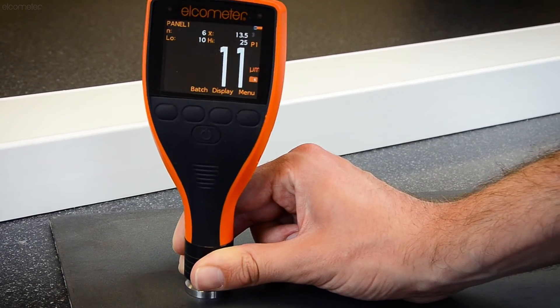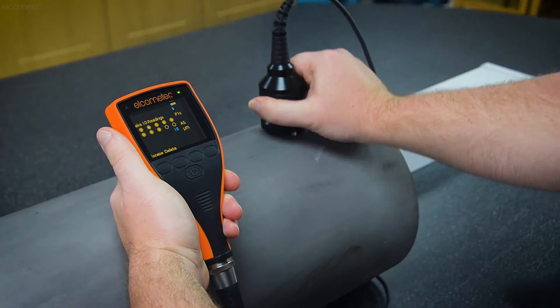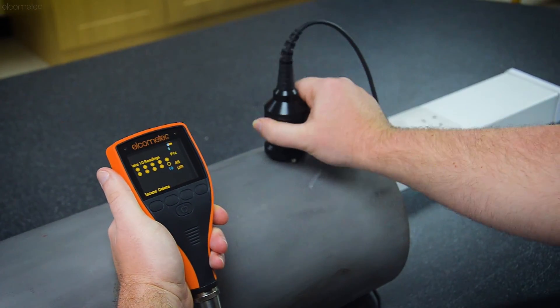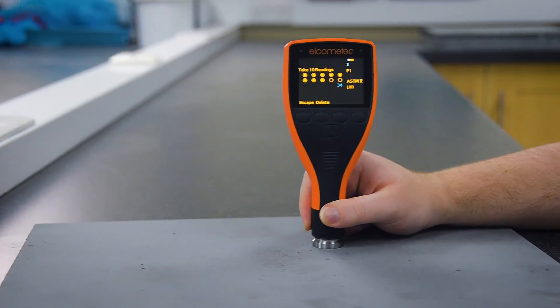So, no matter what number of readings you're required to take, and whether you're required to record the average of the averages or the average of the maximums, the new Elcometer 224 makes it easy to record the results.